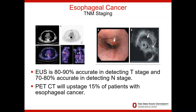Staging is a very important part of determining the treatment for esophageal cancer. The tumor node metastasis staging system is based on a clinical evaluation using imaging studies. The two most important diagnostic studies for staging include endoscopic ultrasound, or EUS. EUS is 80 to 90% accurate in detecting the T stage — the depth of penetration of the tumor in the wall of the esophagus — and 70 to 80% accurate in detecting the N stage, which is spread to local regional lymph nodes.